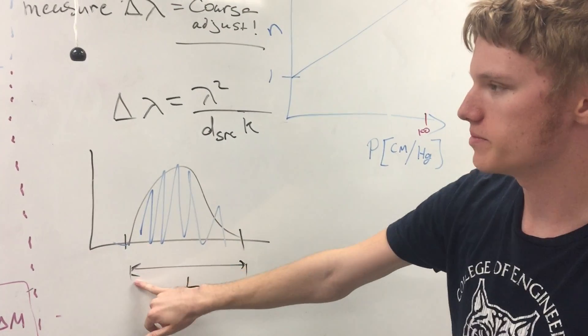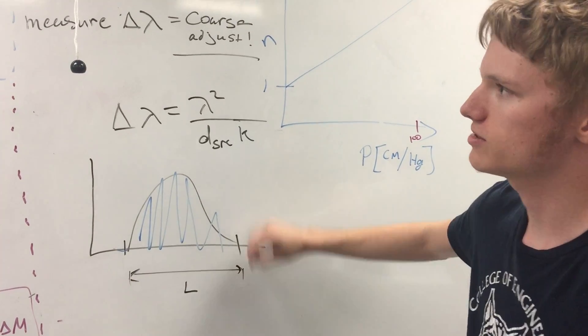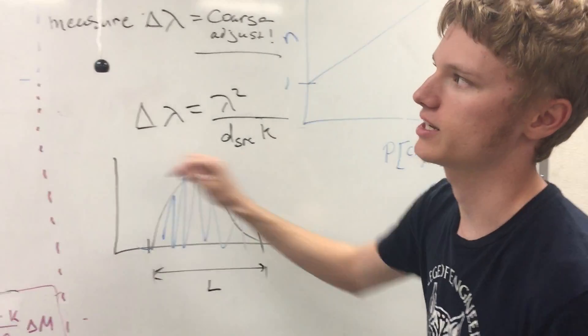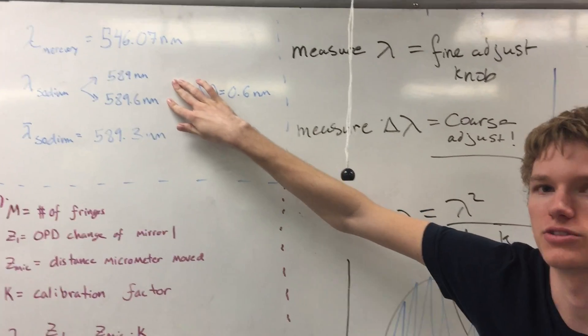For this part of the lab, we found our minimum to minimum fringe visibility distance, which corresponds to our D source, and can be used to find the separation of these wavelength bands for our sodium source.